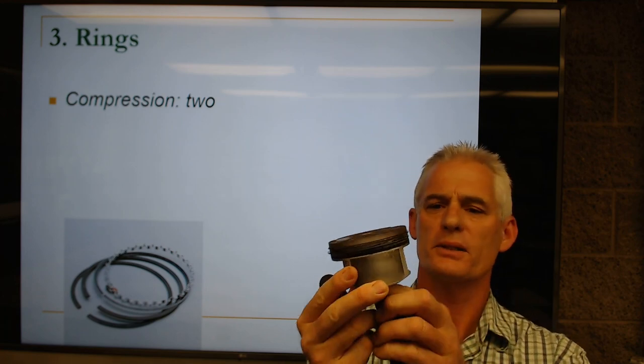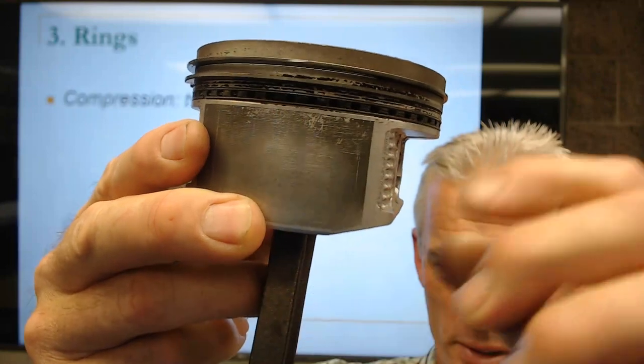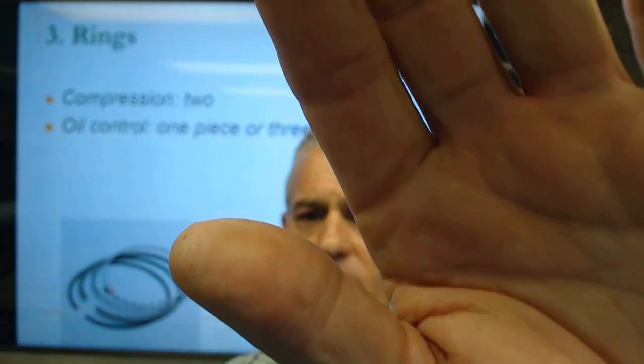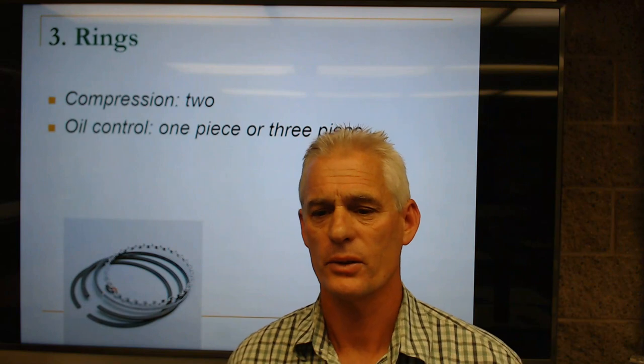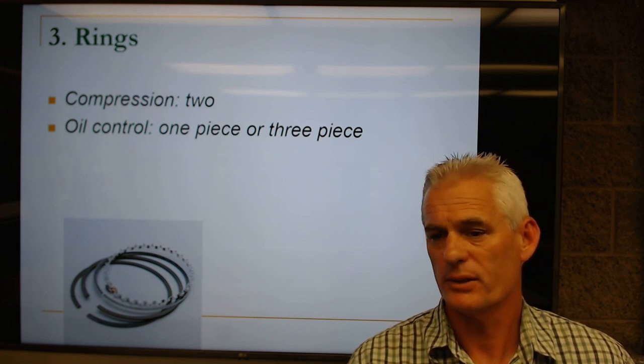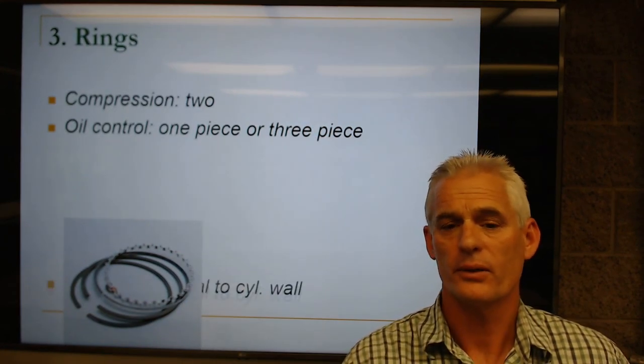This Lexus RX 330 piston has two compression rings right up at the top — they're pretty thin, narrow gauge rings. You can see the two compression rings and the oil control assembly. An oil control ring can be one piece or three piece — typically three piece. As the piston comes down, it scrapes the oil off the cylinder wall and the oil falls back into the oil pan.